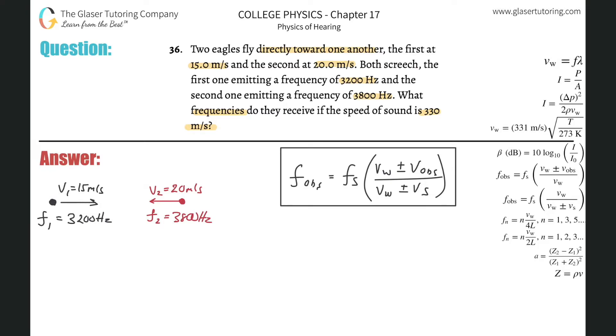So what we have here is we have to now, okay, so we have this formula. Now, let's say I want to find the frequency that this bird, what is it, eagle. This bird is going to hear from this bird, okay? So if I'm talking about this bird, if I want to figure out the frequency that this bird observes, basically, that's being produced by that bird, this is my observer, right? OBS.